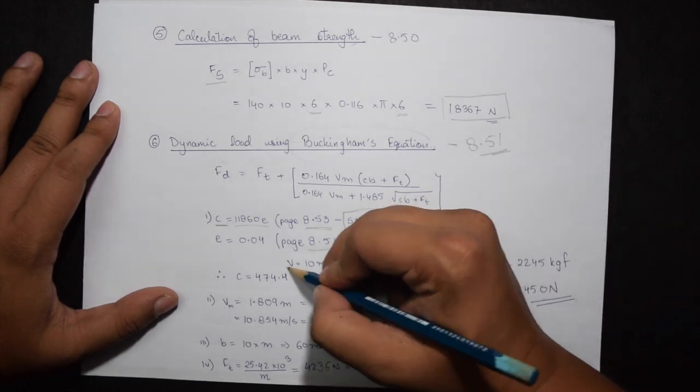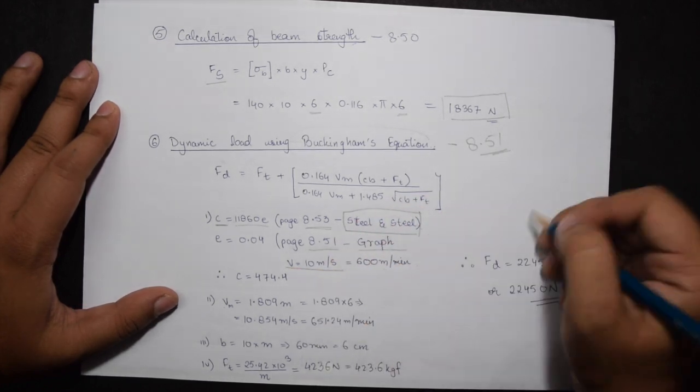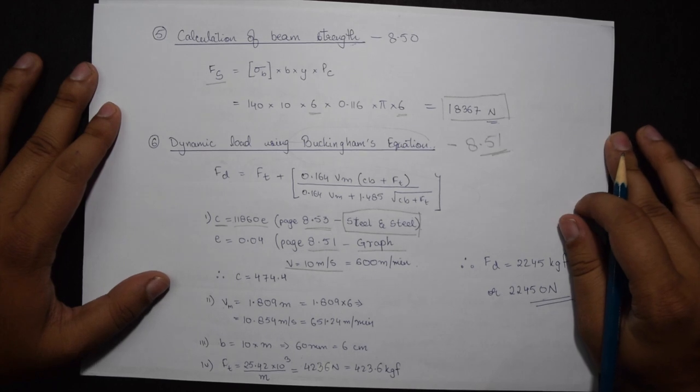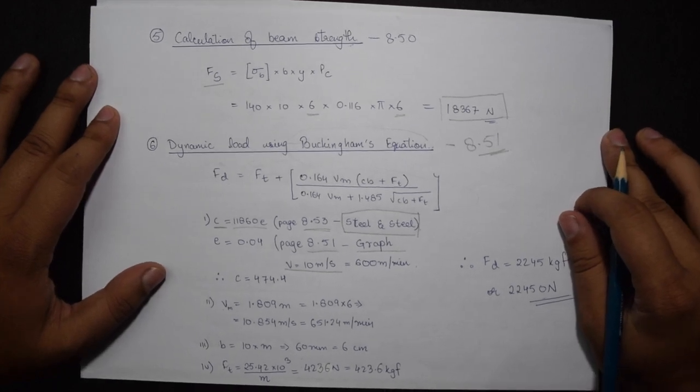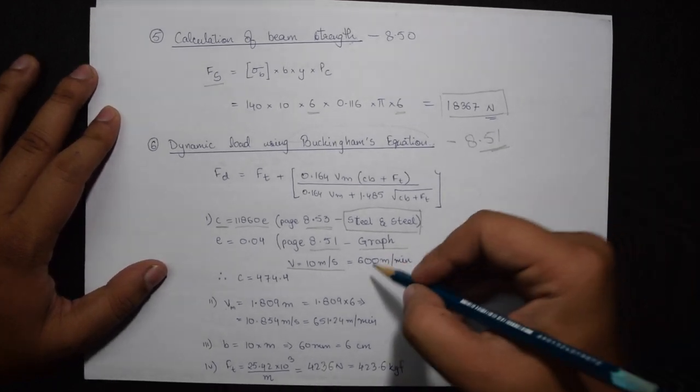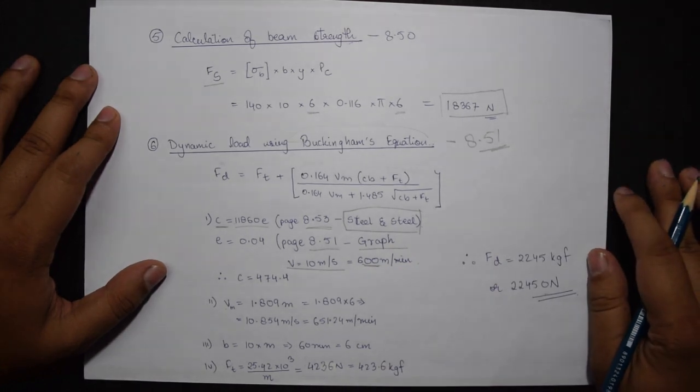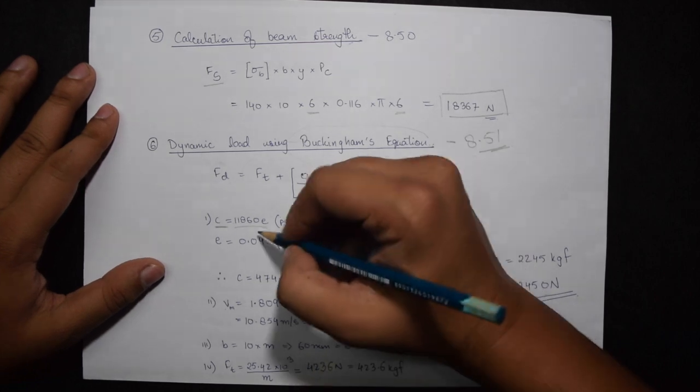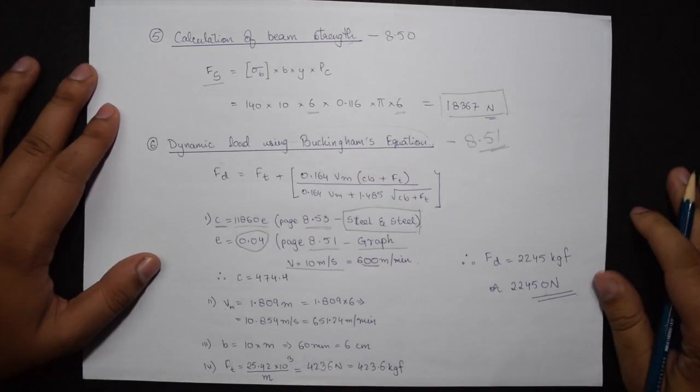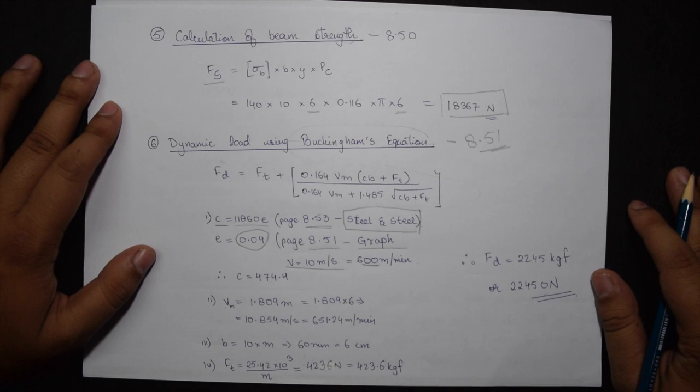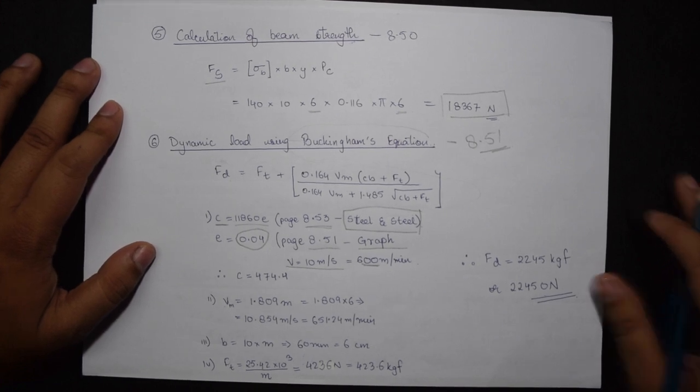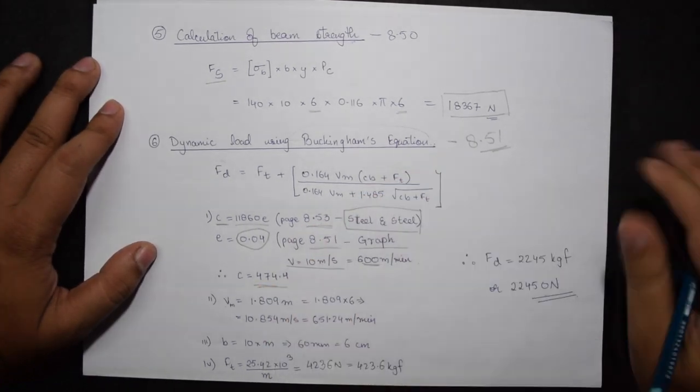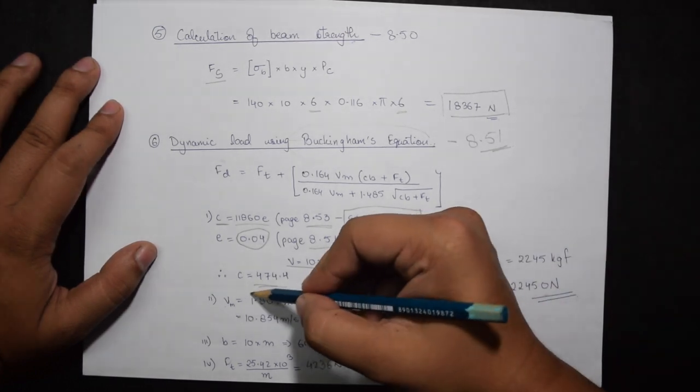So on x-axis as 600, I get the value of the curve for error as 0.04. Therefore the value of C comes out to be 474.4. Now VM is 1.809 times M, which we got from step number 2.